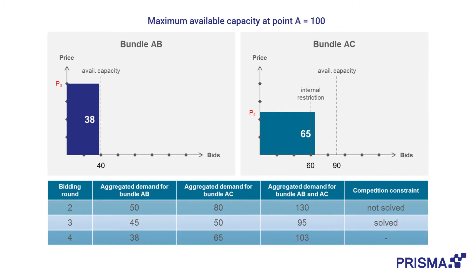Now that we have an internal restriction, the competition constraint of 100 is no longer regarded, since the maximum of both auctions combined is now 100. Therefore, the auctions now behave as two regular long-term auctions.